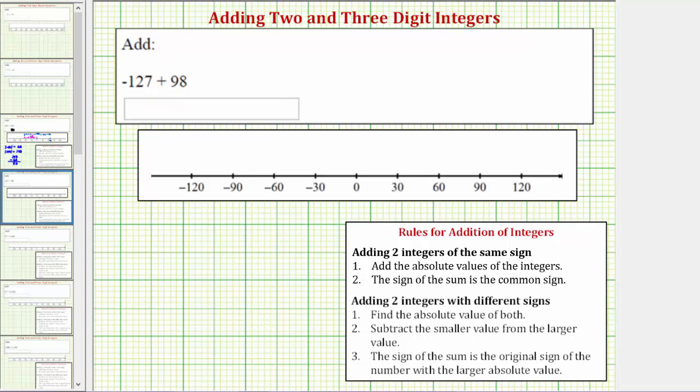Now looking at the formal rules for adding integers, we'll follow the rules for adding integers with different signs, because we're adding a negative and a positive.